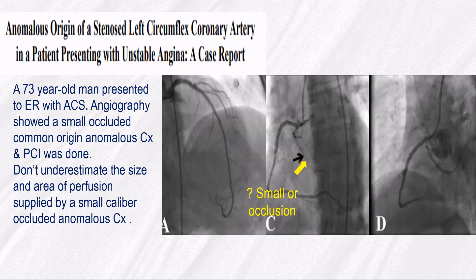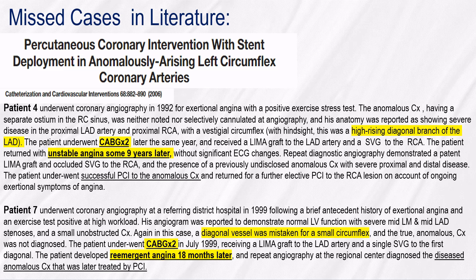A 73-year-old male patient presented with acute coronary syndrome. Angiography showed a small occluded common origin anomalous CX, and PCI was done. Do not underestimate the size and area of perfusion supplied by a small caliber occluded anomalous CX. In two cases, the diagnosis of anomalous CX was made nine years, or one and a half years, after CABG was performed due to acute coronary syndrome presentation. An early cardiac catheterization was diagnosed as CX.